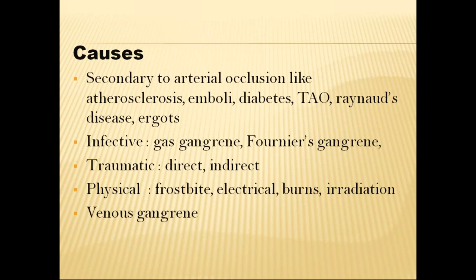What are the causes of gangrene? Gangrene can be due to infective causes, traumatic, physical, venous, or secondary to arterial occlusions. For arterial occlusions, the most common causes are atherosclerosis, emboli, TAO, diabetes, Raynaud's, and ergot poisoning. Infective causes include gas gangrene and Fournier's gangrene.